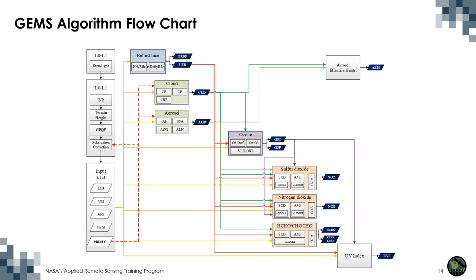This slide shows the flowchart of the GEMS algorithm. Once Level 1C data is generated from Level 0 data, it follows pipelines for producing surface information, cloud information, and aerosol optical properties. Ozone products are then derived using Level 1C and cloud data, followed by retrievals of SO2, NO2, formaldehyde, and glyoxal. Finally, aerosol effective height and UV index products are generated.